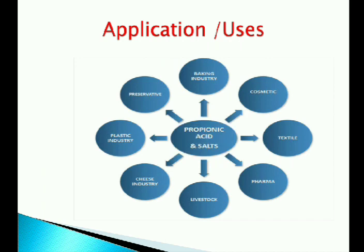Applications and uses: Propionic acid and its salts are used in the baking industry, cosmetics, textile, pharma, livestock, cheese industry, plastic industries and as preservatives. In food industries, propionic acid and its sodium, calcium and potassium salts are incorporated to suppress the growth of mold and rope in breads and cakes, on the surface of cheese, malt and fruits. The association of propionic acid with lactic and acetic acid is also used for preservation of food.